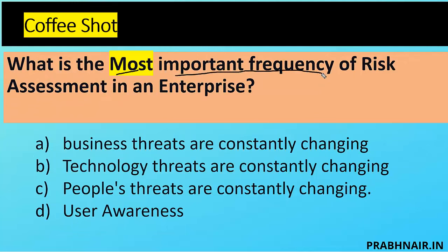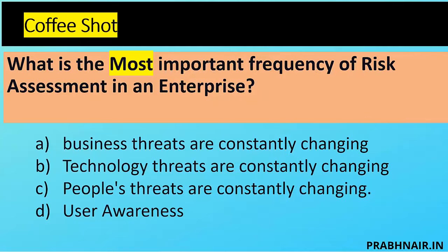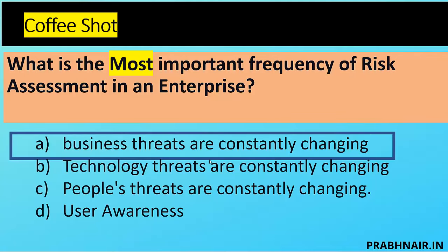Question seven: what is the most important reason for conducting risk assessments regularly in the enterprise? Option A — business threats are constantly changing — makes sense. Technology threats are constantly changing also makes sense. User awareness (option D) is about training, so it's removed. Between business and technology threats, business threats changing is the broader driver. The answer is A — business threats are constantly changing, which is why we conduct risk assessments regularly rather than just annually.